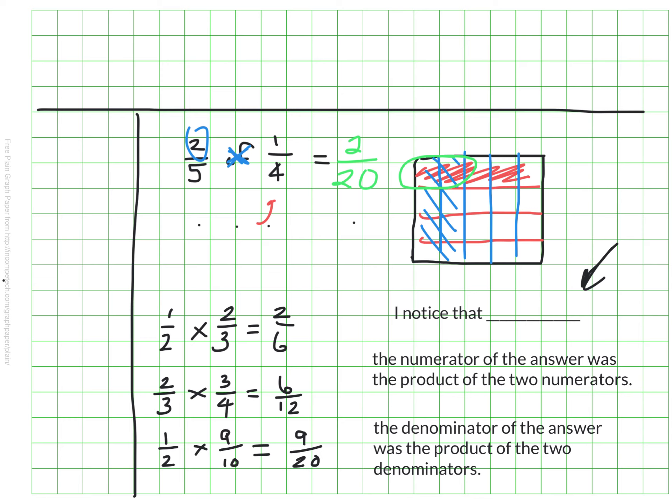I also wrote what I noticed, and I noticed that the numerator of the answer was the product of the two numerators. So one times two is two, which was the answer's numerator. Two times three is six. One times nine is nine.